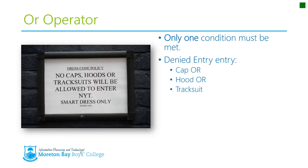The next operator is the OR operator. In a lot of ways, the OR operator is the opposite of the AND operator — only one condition must be met. If one condition is met, the operation returns true. This dress code example is a classic OR operator: a person will be denied entry if they have a cap, or if they have a hood, or if they have a tracksuit. So if only one of these conditions is true, they'll be denied entry. Basically, if just one condition is true, an OR operation will return true.